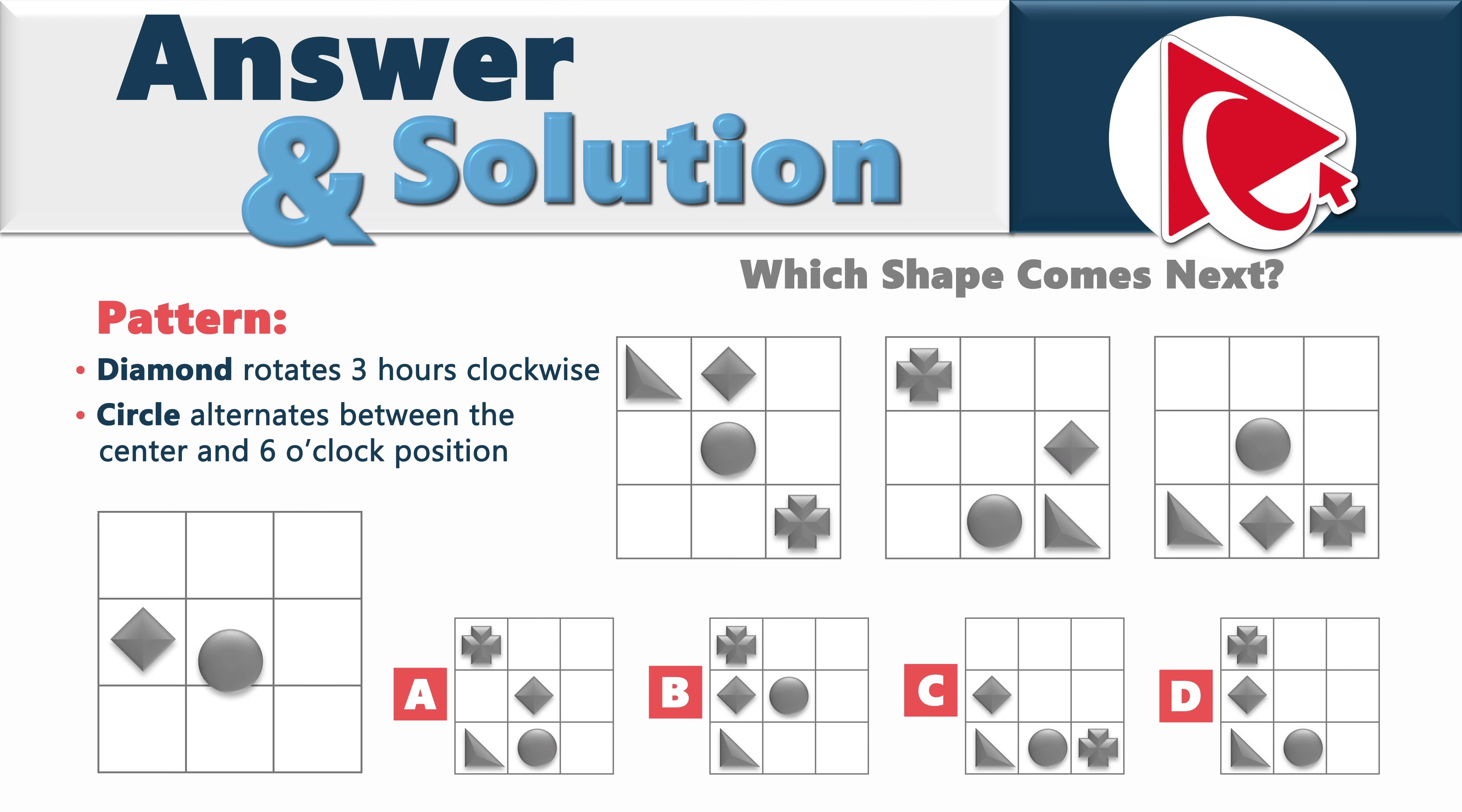The circle alternates between the center and 6 o'clock position. In the first shape, it's at the center, then it moves to 6 o'clock, and then it moves back to the center.